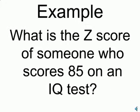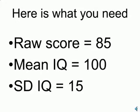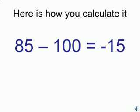Here's another example. What is the z-score of someone who scores 85 on an IQ test? Here the raw score is 85. The mean and standard deviation remain the same at 100 and 15, respectively. Here's how you calculate it: take the raw score of 85, subtract the mean of 100.